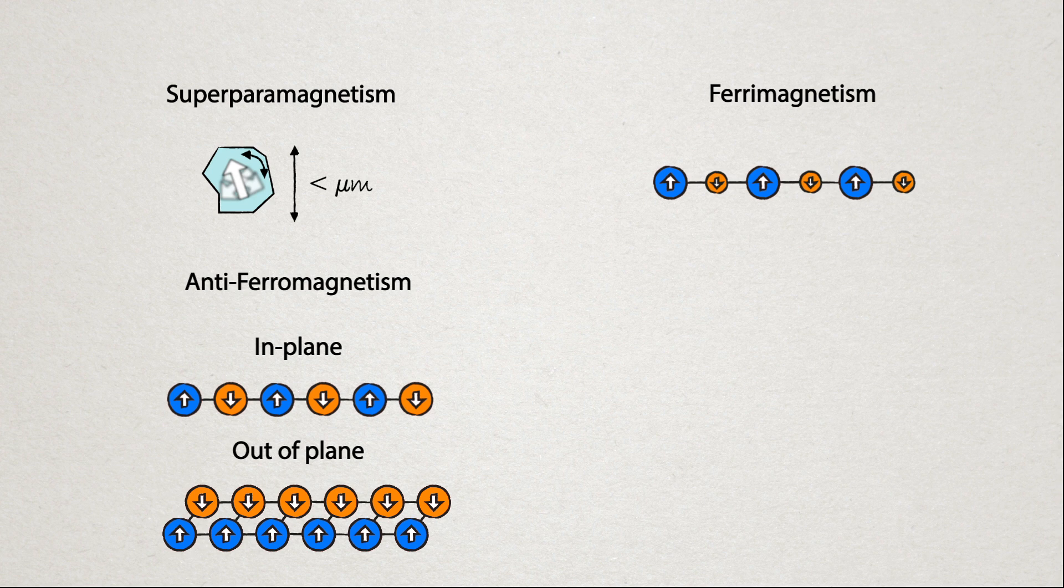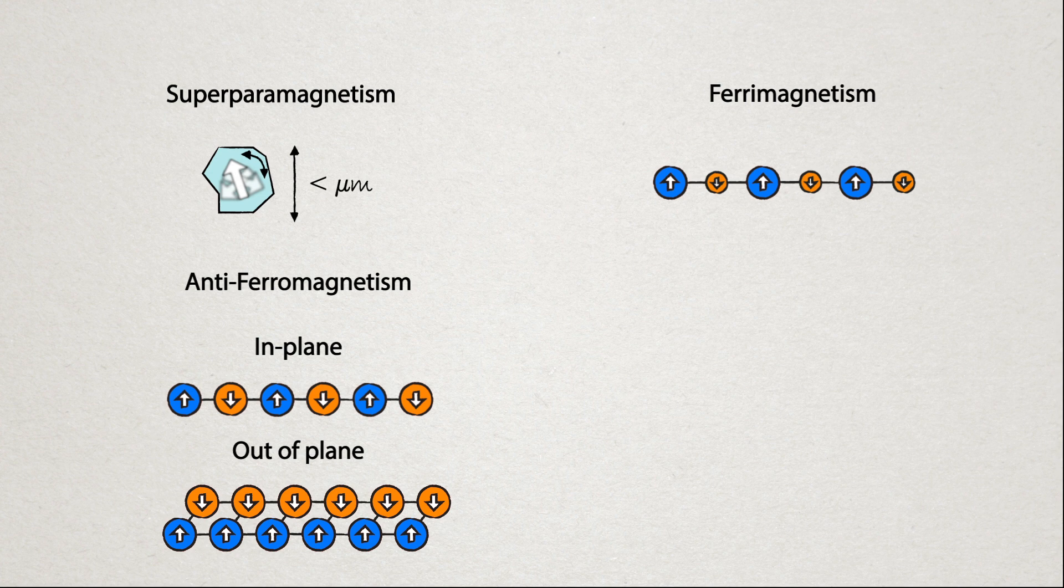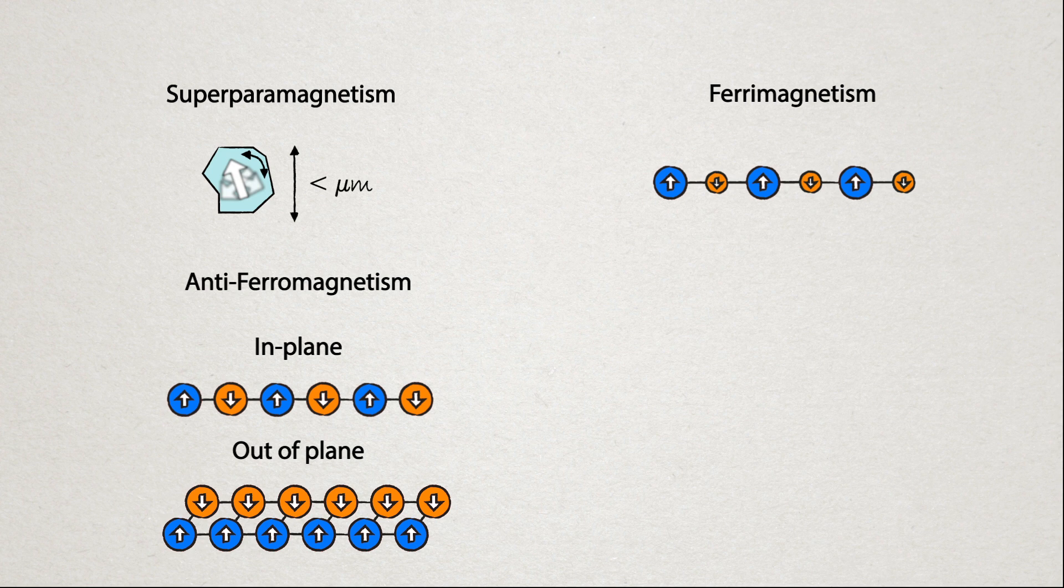So not all magnets are actually ferromagnetic. Weak magnets can be ferrimagnetic, and some can be anti-ferromagnetic.